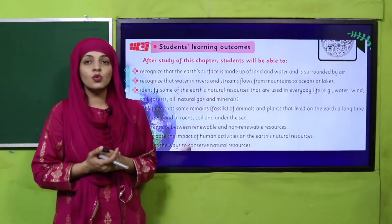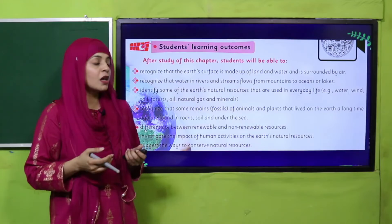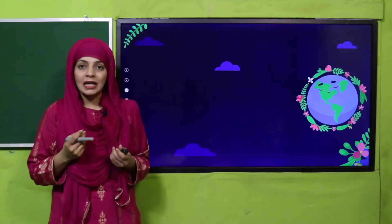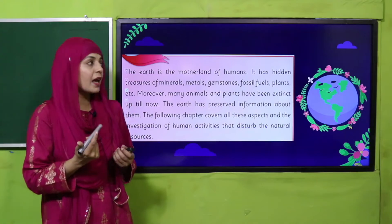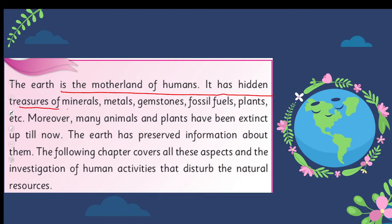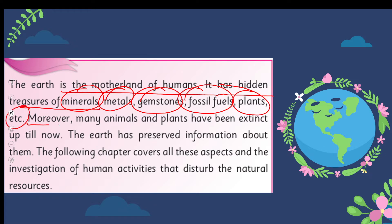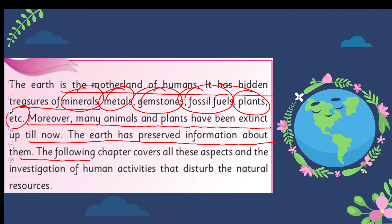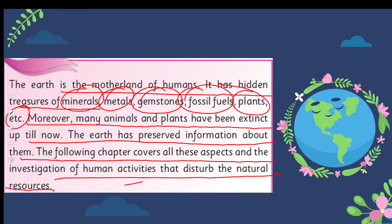These are the student learning outcomes which we will cover in this chapter. The earth is the motherland of humans. It has hidden treasures of minerals, metals, gemstones, fossil fuels, plants, and more. Moreover, many animals and plants have been extinct up till now, and the earth has preserved information about them. This chapter covers all aspects and the investigation of human activities that disturb the natural resources.